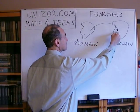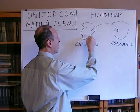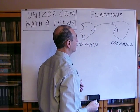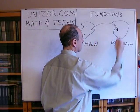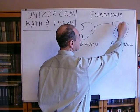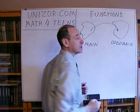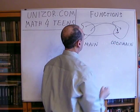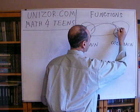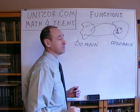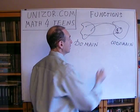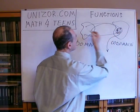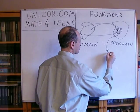A function is defined on a set of elements which we call the domain, and it takes values in the set which we call the codomain. Not necessarily all the values will fill up the codomain completely. The images of elements of the domain may actually be a subset of the codomain set — we usually call this subset the range.